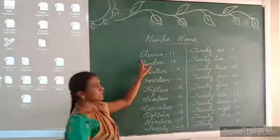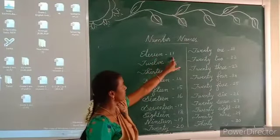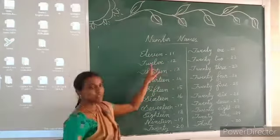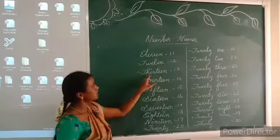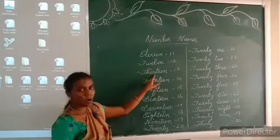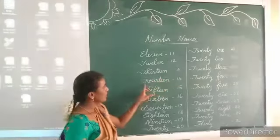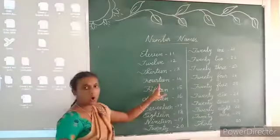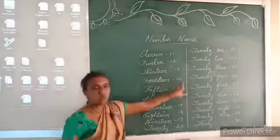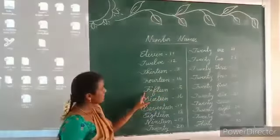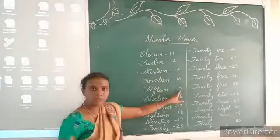Look at the first one. Eleven — E-L-E-V-E-N — 11. Twelve — T-W-E-L-V-E — 12. Thirteen — T-H-I-R-T-E-E-N — 13. Fourteen — F-O-U-R-T-E-E-N — 14. Fifteen — F-I-F-T-E-E-N — 15.